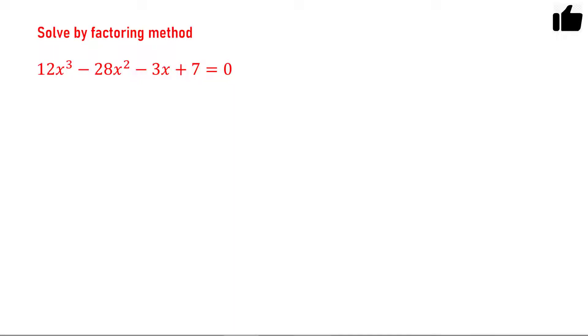Hello friends. You have to solve this cubic equation by method of factorization. The equation is 12x³ - 28x² - 3x + 7 = 0. This equation will have 3 roots and you have to find those roots by factorizing this equation.